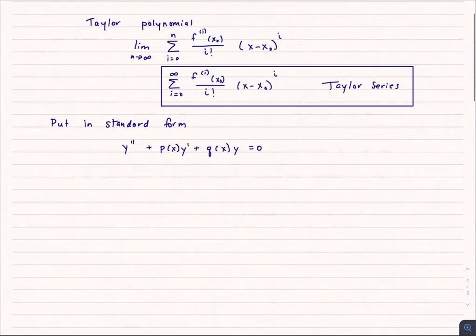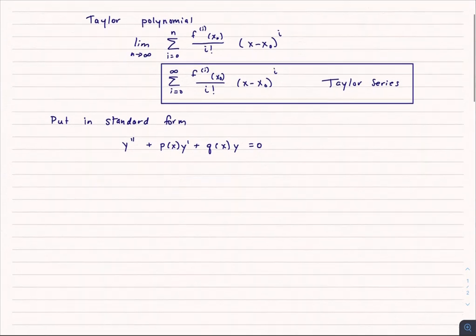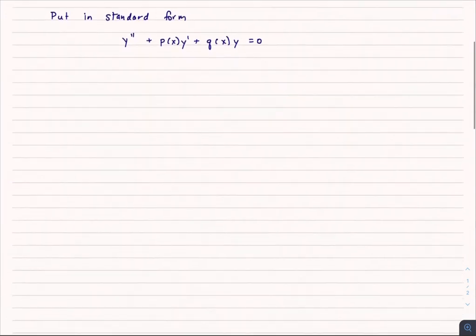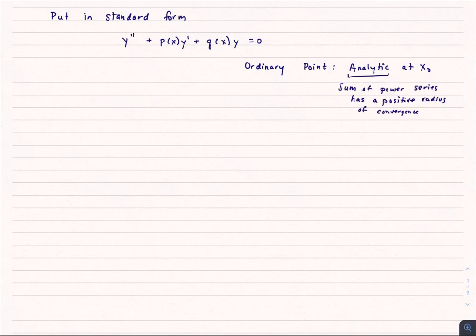Ordinary points are analytic at the point x0. What does analytic mean? It means the sum of the power series has a positive radius of convergence. It means that around the point, there is an area to the left and to the right of it where the function, the power series, does converge.